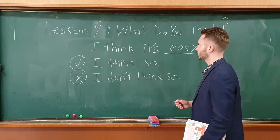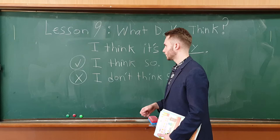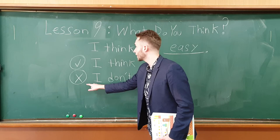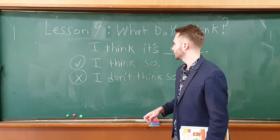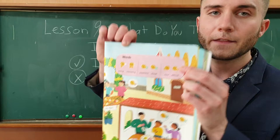And here are two more answers. So I say it's easy. You can say, I think so. Like you agree. Yeah, I think so. It's easy. Or you can disagree. Like no. You'd say, I don't think so. I don't think it's easy. And then you would answer the opposite. I think it's difficult.